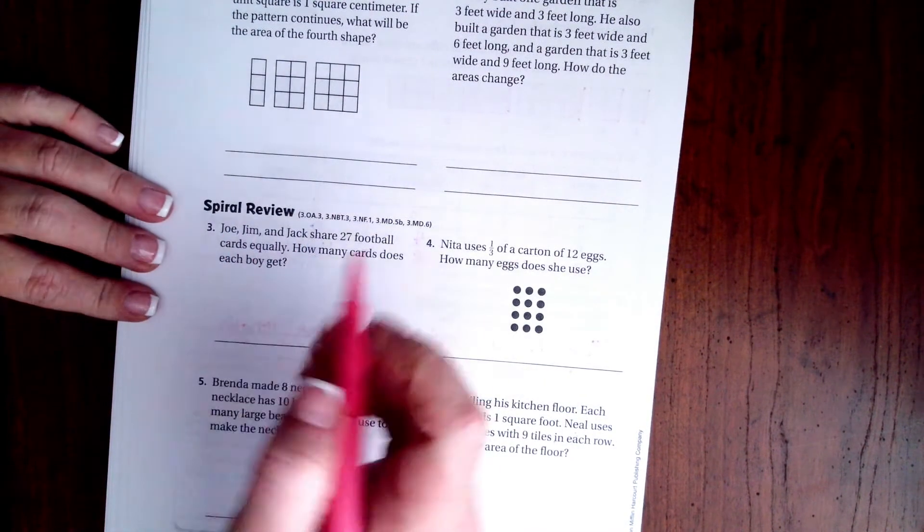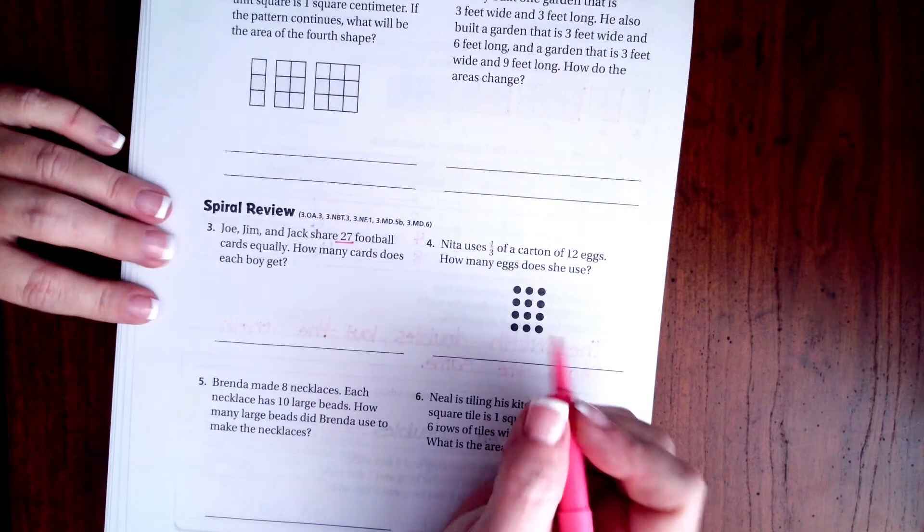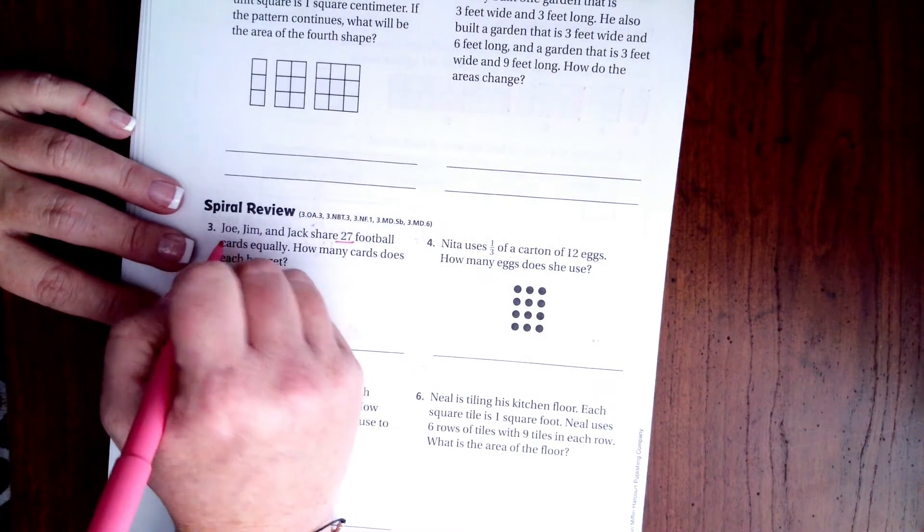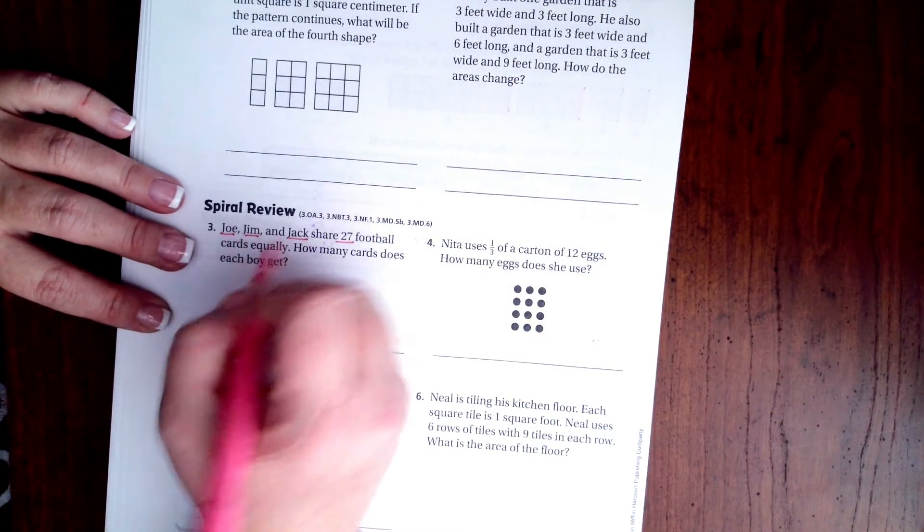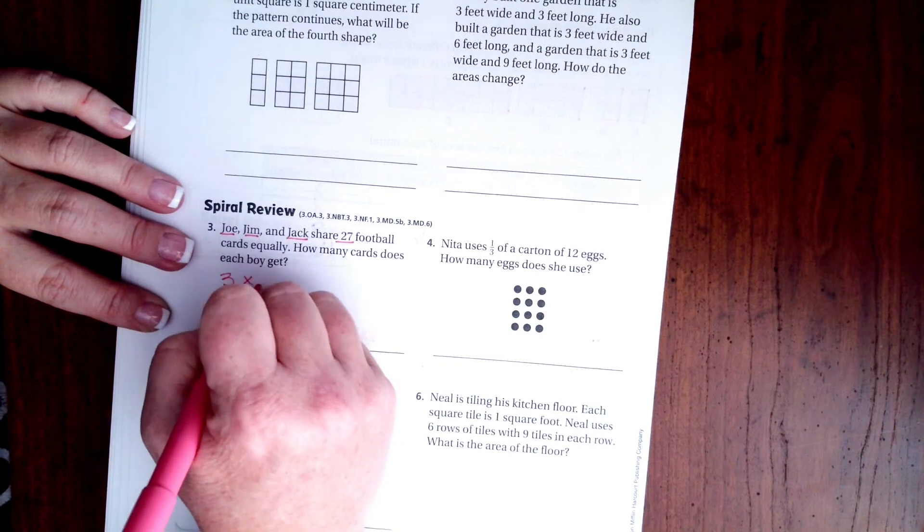It says Joe, Jim, and Jack share 27 football cards equally. So there are one two three guys, three times what equals 27. How many cards does each boy get? Well, three times nine is 27, so nine cards.